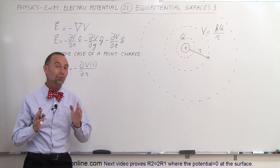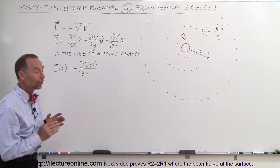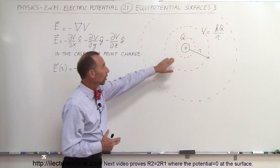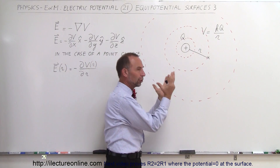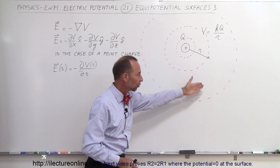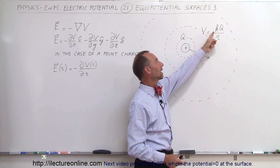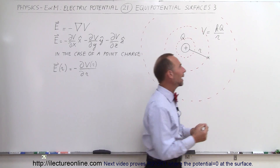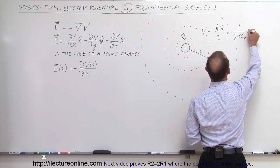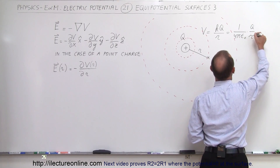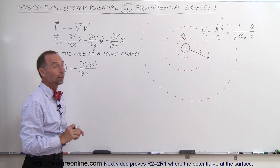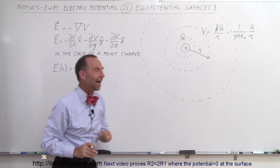Welcome to our lecture. Let's introduce a new concept dealing with equipotential surfaces. Here we have a point charge, and we can imagine spherical shells around that point charge representing different, decreasing potentials as we go farther out. The equation is V = KQ/r, where K = 1/(4πε₀), so V = Q/(4πε₀r). The potential diminishes as 1/r — the farther you go, the smaller the potential, considering we have a positive charge at the center.